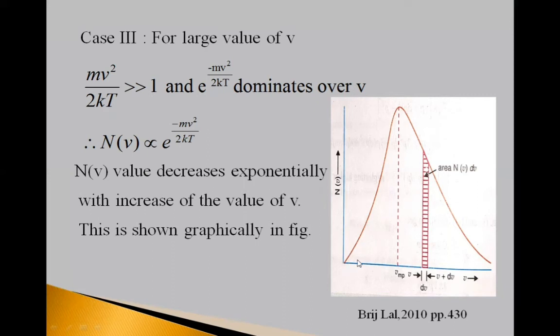And see here, this portion, up to this portion, this portion shows v square dominates. And this portion shows e raised to minus mv square upon 2kT dominates like this.